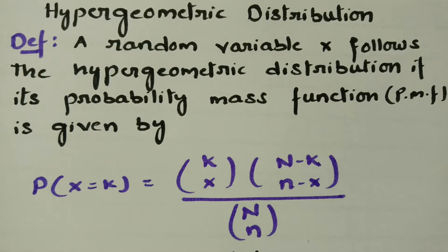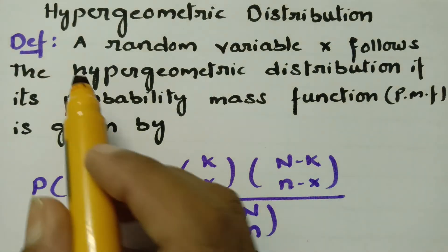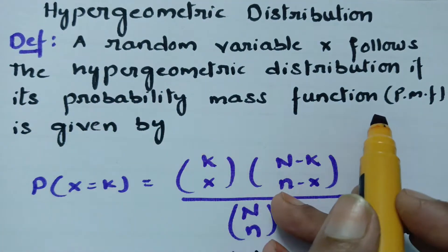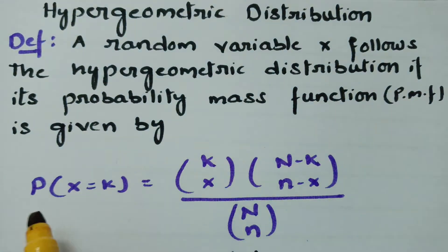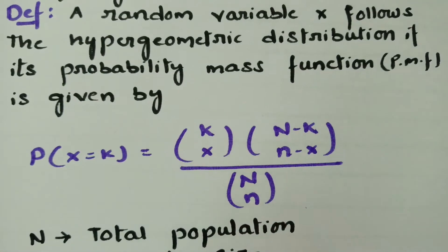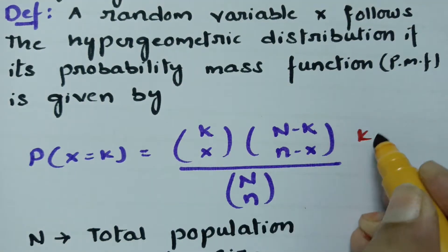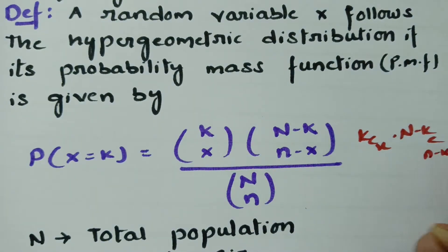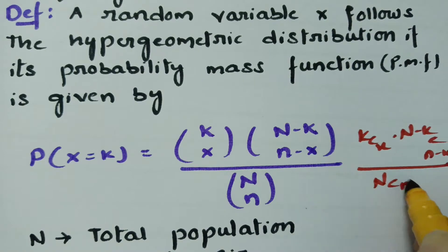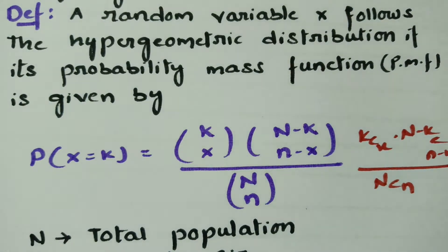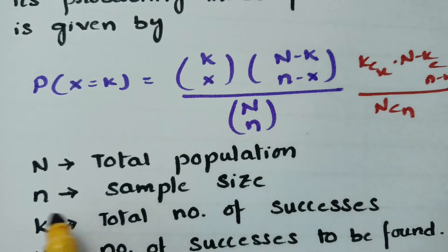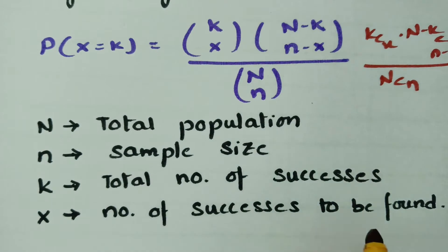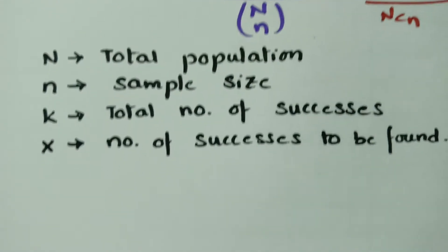This video is on hypergeometric distribution. According to the definition, a random variable x follows the hypergeometric distribution if its probability mass function (PMF) is given by: P(x = k) = [K·C·x × (N-K)·C·(n-x)] / N·C·n, where N is the total population, n is the sample size, K is the total number of successes, and x is the number of successes to be chosen.